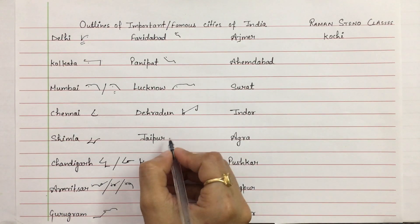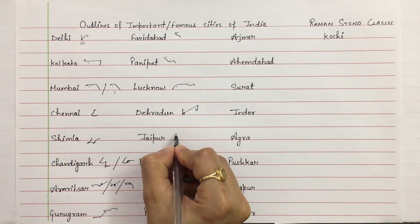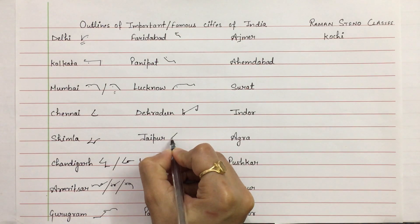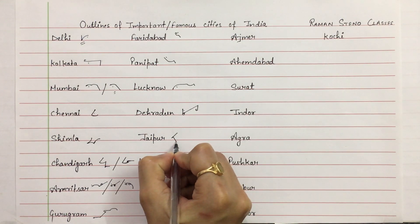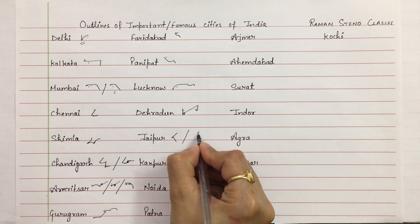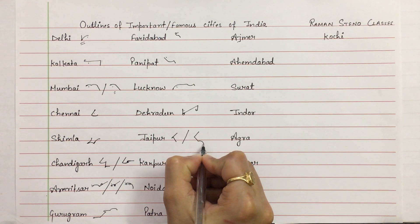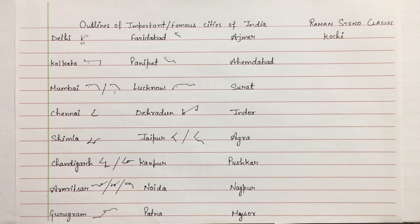Jaipur — above the line. J and P, we will employ hook R. Jaipur. Or you can write it complete. Jaipur.